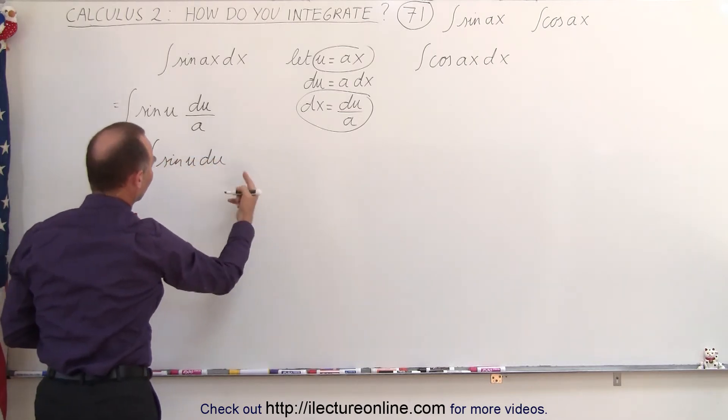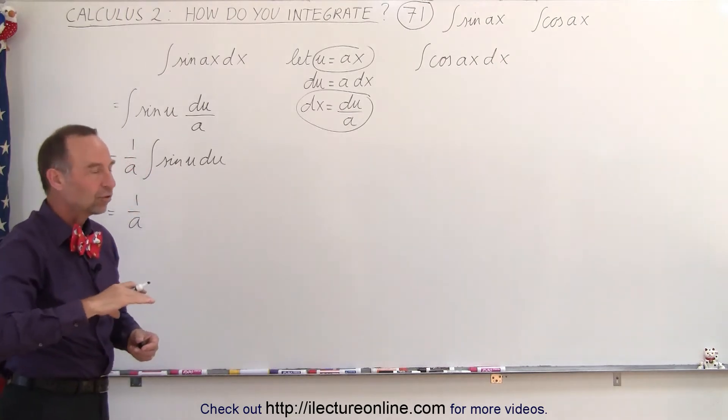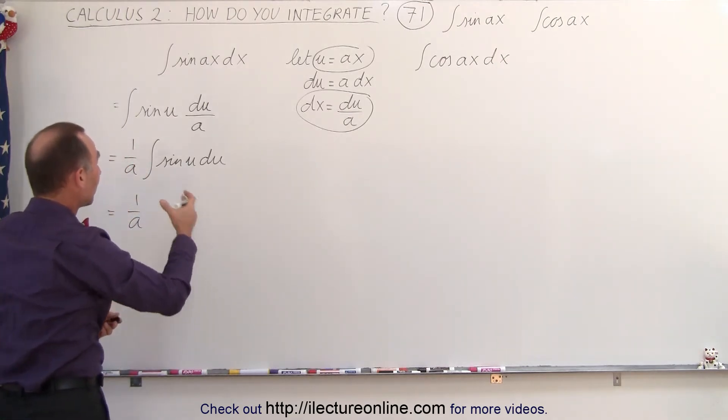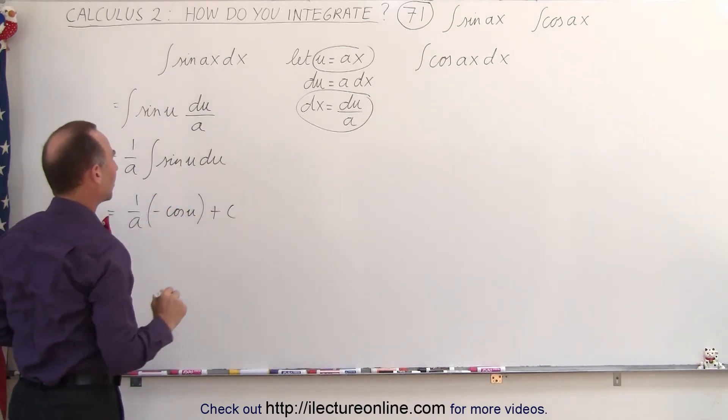And this of course is a standard way of writing that, so we can say this is equal to 1 over A. Now, the integral of the sine is the negative cosine because the derivative sine is the positive cosine, so that would be the negative cosine of u plus the constant of integration.